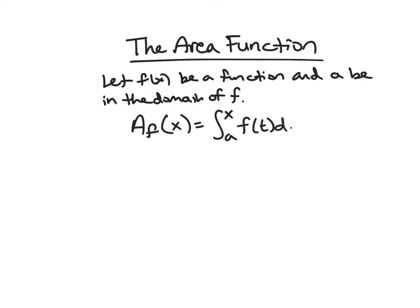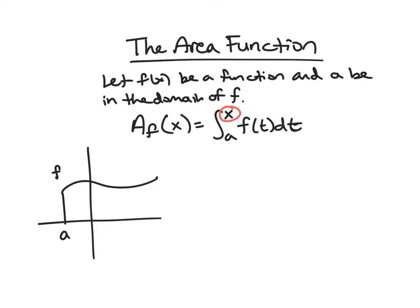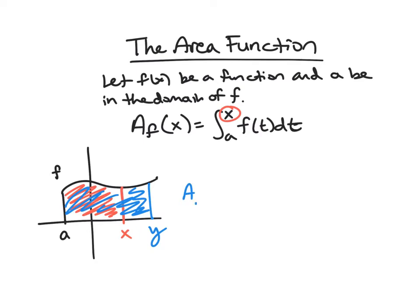There are a few things to discuss. Suppose this is our picture of f with our border at a. This is called the area function because we have a definite integral — signed area — where the input is x, the upper bound of integration. If we input some x, then A_f(x) is that area. If we then plug in y, we get the red area plus the blue area, so A_f(y) is the integral from a to y.